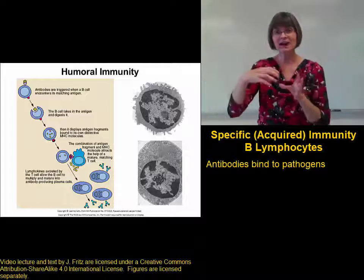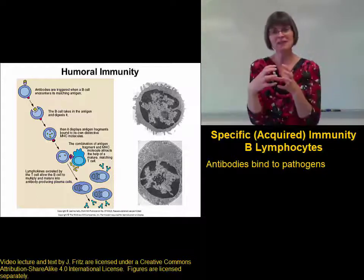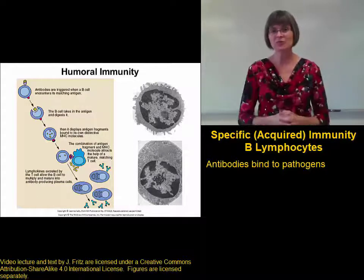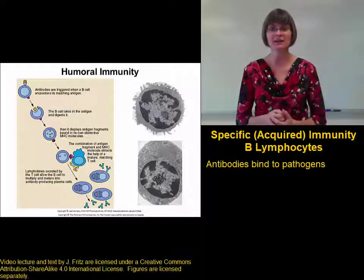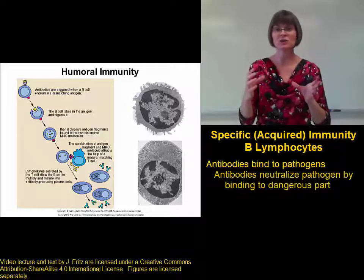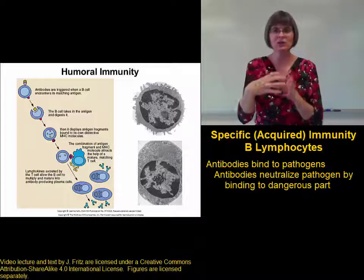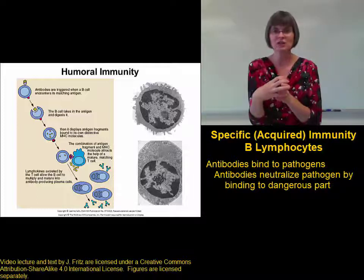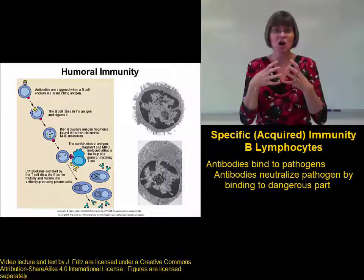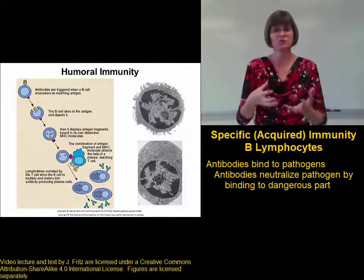When an antibody finds the pathogen that it matches, it binds to that pathogen and neutralizes it. Antibodies can neutralize pathogens through a couple of different mechanisms. Sometimes the antibody uses what's called neutralization, where the antibody just binds to the dangerous part of the pathogen, and then the pathogen's not dangerous anymore — sort of like putting a muzzle on a dog. The dog's still alive, but the dog's not dangerous anymore.